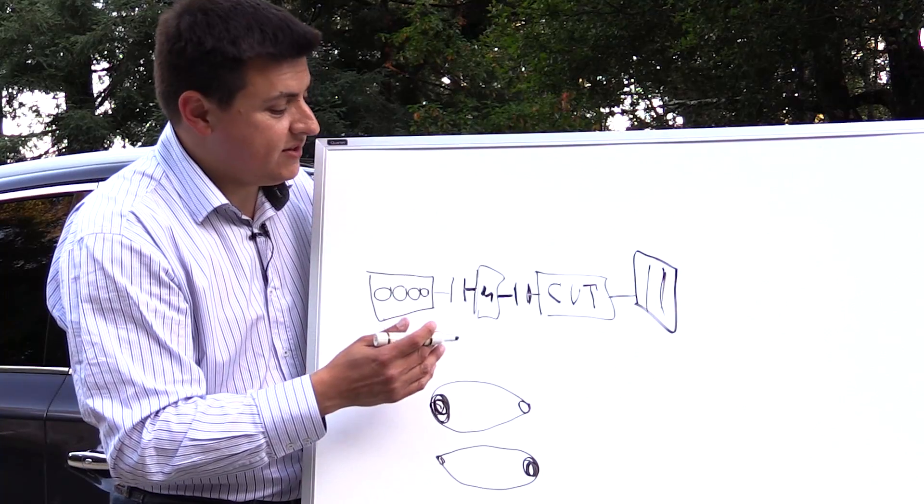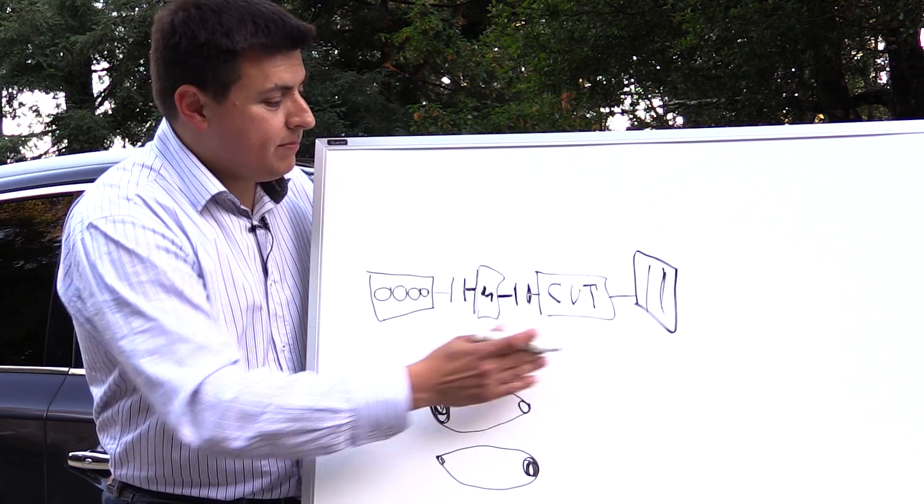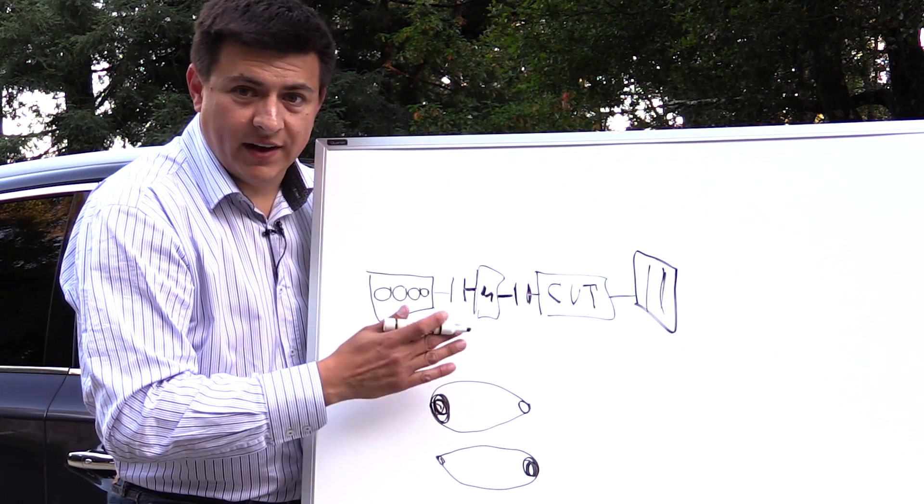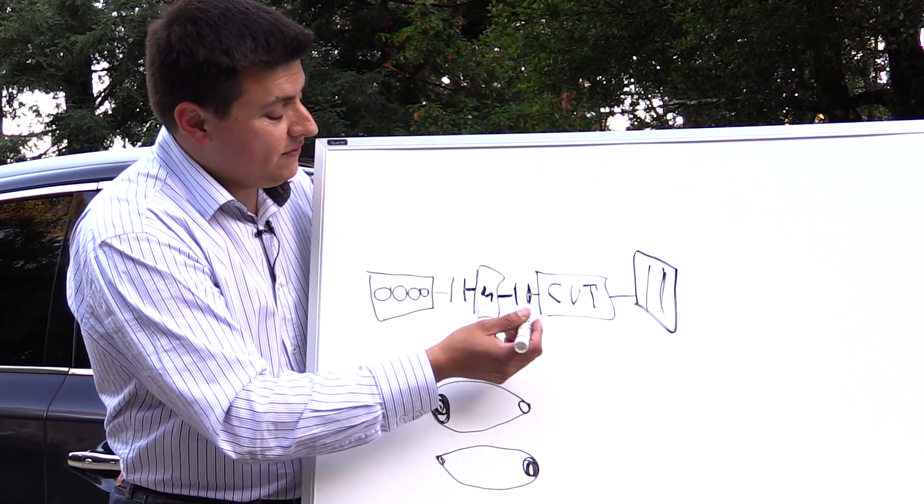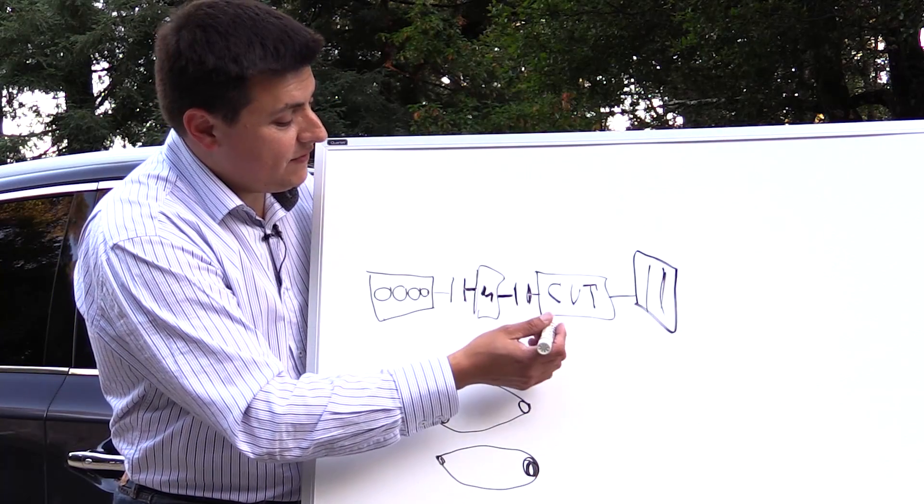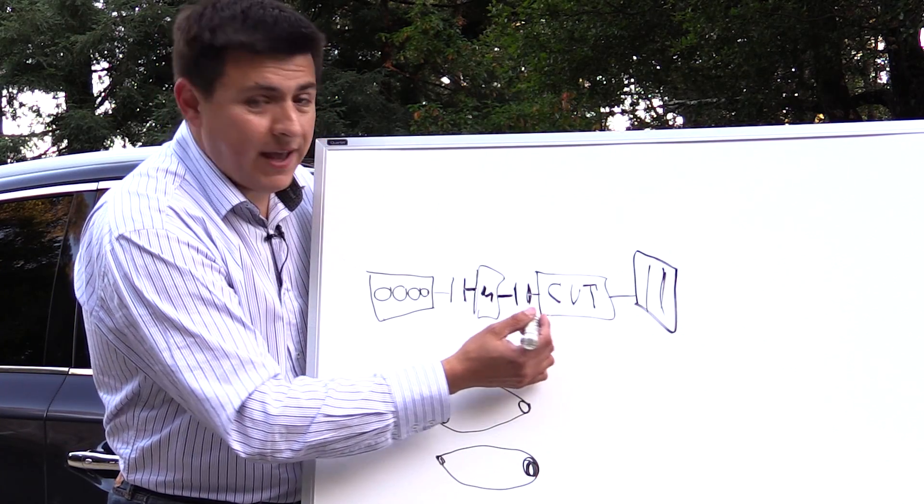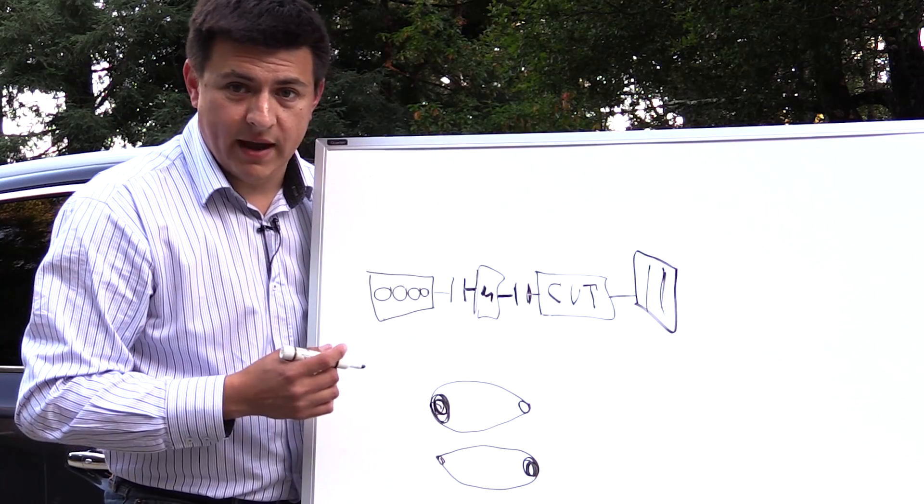This is relatively similar to what you find in the Infiniti Q50 and Q70 hybrid. The difference in the Q70 and Q50 hybrid is that instead of a CVT we have a traditional 7-speed automatic over there.